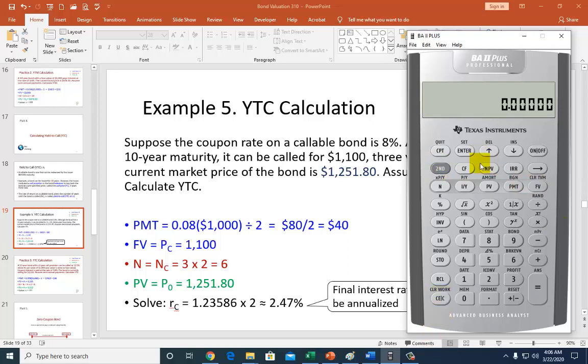All right, so now I'm good to go on the third row. So $40 is payment, and $1,100 is the future value, which is the call price. And then 6 is number of periods, which is the number of call periods. And finally, $1,251.80 with a negative. Click that. We enter it as PV, and then we compute I over Y.